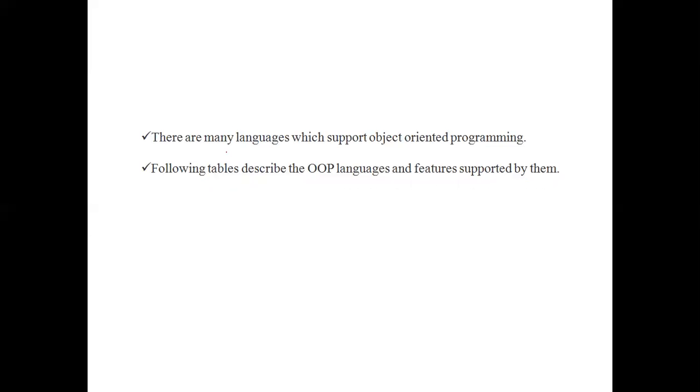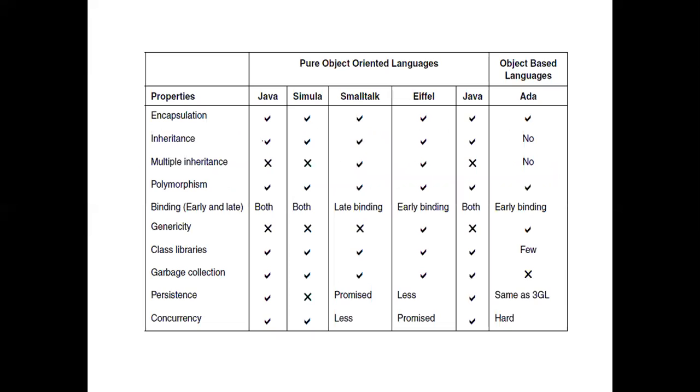Up to now we have discussed object-oriented programming. Now, what are the languages which support object-oriented programming? There are many languages which support object-oriented programming. The following table gives a list of them. Here are the languages — pure object-oriented languages.